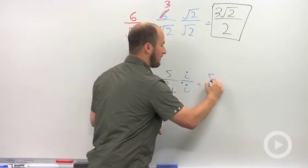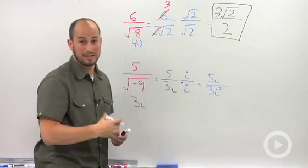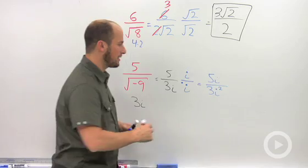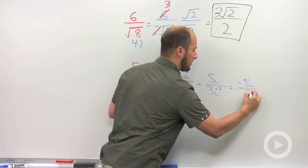Simplifying this out, we get 5i in the numerator over 3i squared in the denominator. i squared is negative 1. So this just becomes negative 5i over 3.